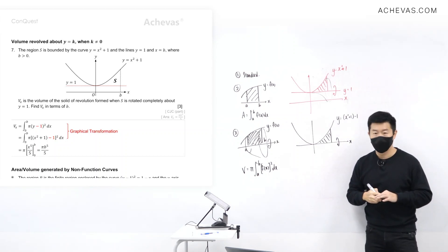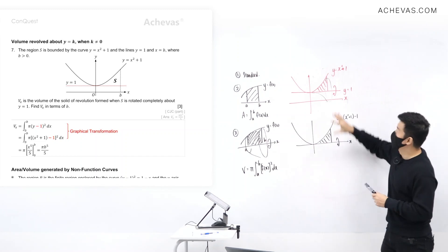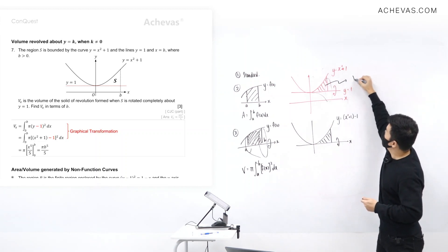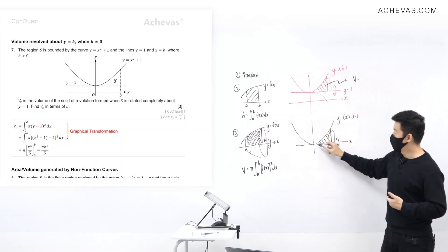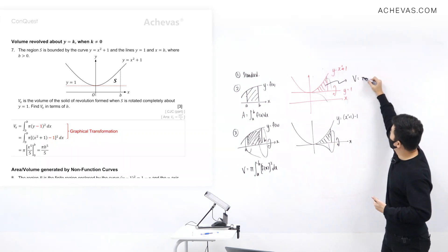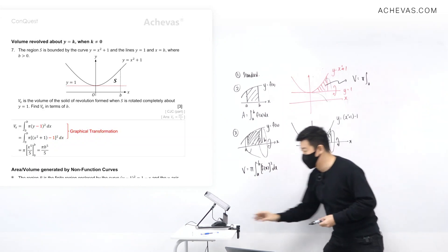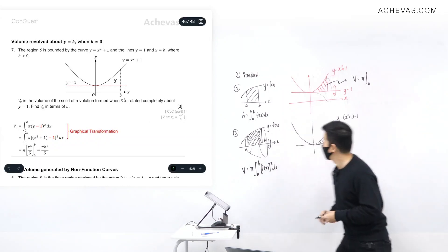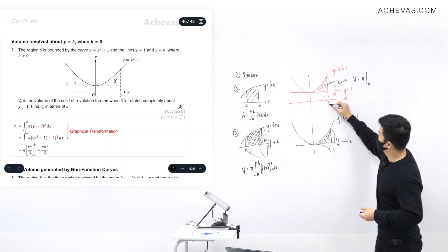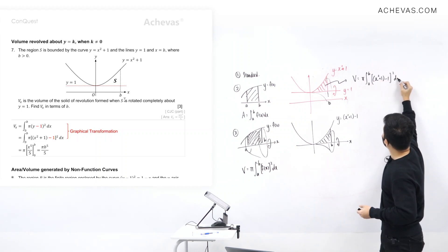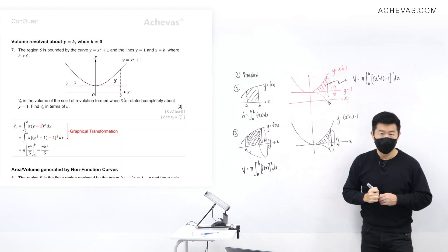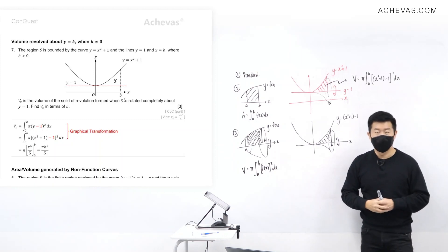It's just through a simple transformation, which is why the volume of the original can be found by computing the volume of the transformed region. To find that volume it is going to be π times the integral from zero to b — where this value here is b — of (x squared plus 1 minus 1) squared dx.